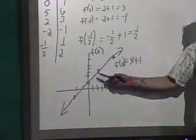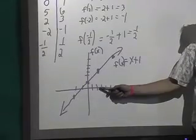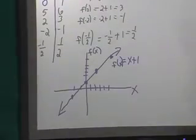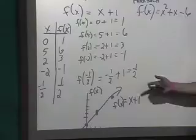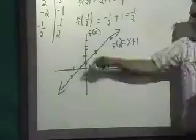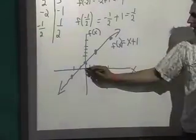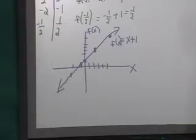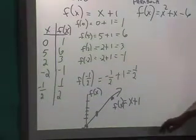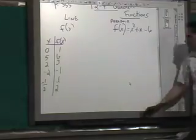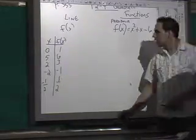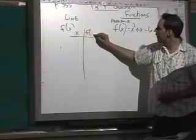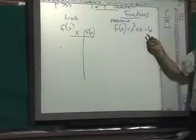Now let's go to a parabola and look at the difference. I promised you it would end up looking like a U-shape. The first thing we're going to do is create a T-chart: x and f of x. f of x equals x squared plus x minus 6.